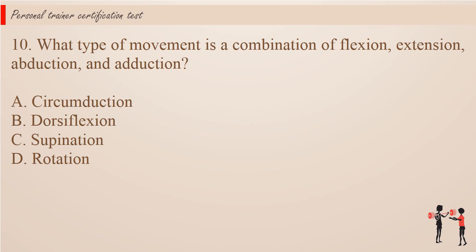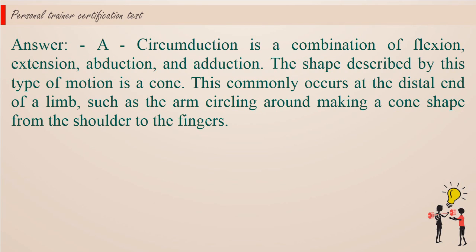Question 10. What type of movement is a combination of flexion, extension, abduction, and adduction? a. Circumduction. b. Dorsiflexion. c. Supination. d. Rotation. Answer: a. Circumduction is a combination of flexion, extension, abduction, and adduction. The shape described by this type of motion is a cone. This commonly occurs at the distal end of a limb, such as the arm circling around making a cone shape from the shoulder to the fingers.